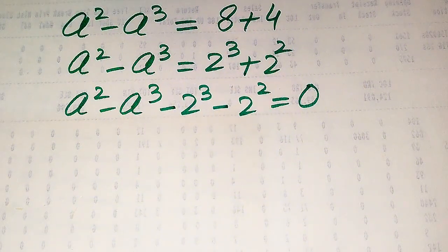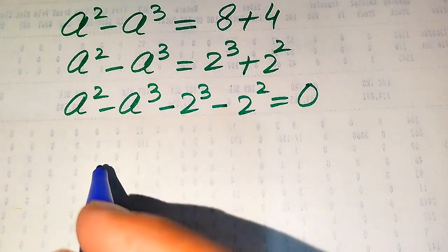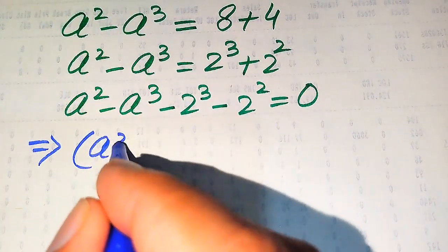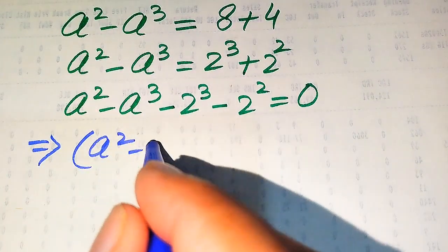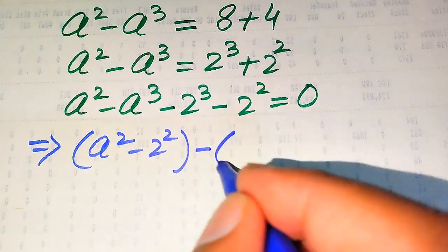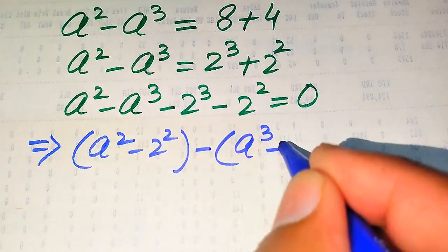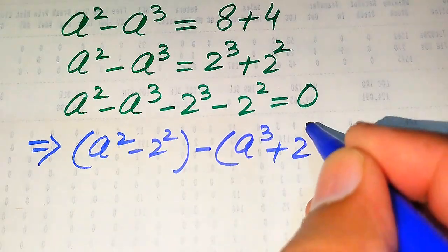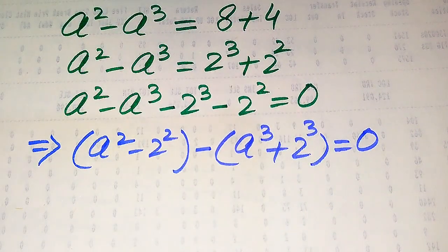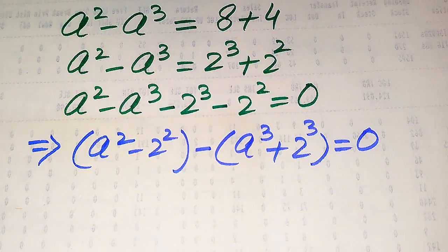We pair the cubic term with the cubic term and the square term with the square term. We pair a squared with negative 2 squared. Taking a common negative sign from those, we get the remaining values as a cubed plus 2 cubed, and the whole equation equals zero.